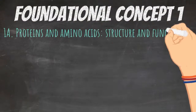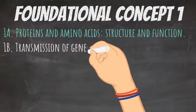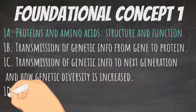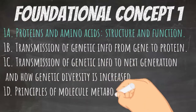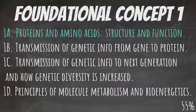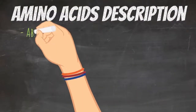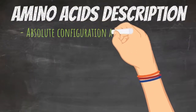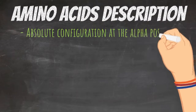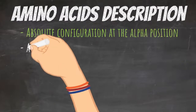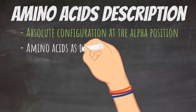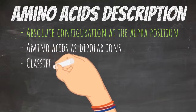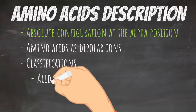This video is about foundational concept number one for Biology 1A: proteins and amino acid structure and function. This accounts for 55% of the biology section. This is the first MCAT video and we'll touch on amino acid description and the absolute configuration of the alpha position. The next amino acid videos will cover amino acids as dipolar ions.